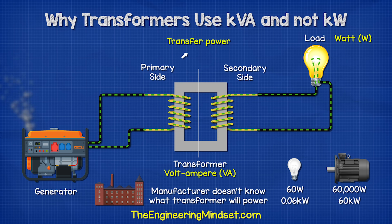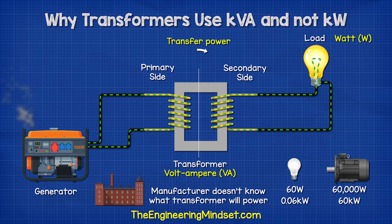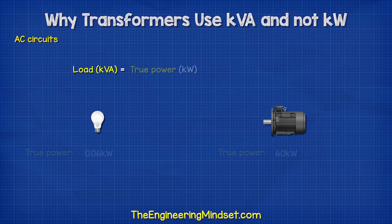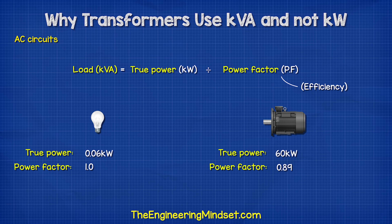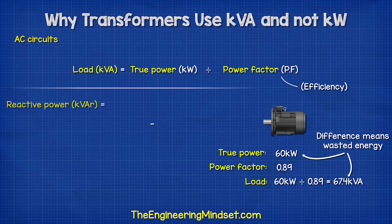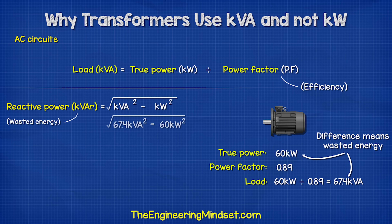So they state the total rated apparent power in volt amps. That's because in AC circuits, the load depends on the true power in kilowatts and the power factor, which is basically efficiency. This varies depending on the device. Some energy is consumed but produces no work — it is just wasted as heat — and we call this reactive power, with the units VAR.